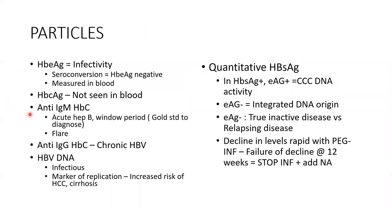E antigen indicates infectivity. When the cell is rapidly multiplying, there is more DNA production and core antigen replication — so E antigen is an indirect marker of core replication. The aim of most treatment is to convert EAG positivity into EAG negativity. The core antigen is never seen in blood; IgM anti-HBc is used to distinguish acute from chronic infection. IgM positivity indicates acute infection; IgG positivity indicates chronic. DNA is the active marker of replication and infection.